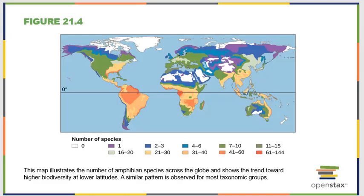The distribution of species across the planet varies depending on which species we're discussing. Going back to the example of polar bears: animals that need very cold weather, ice caps, and ice flows are obviously found only in very particular parts of the planet. So biodiversity maps can look quite different depending on what the map is actually depicting.